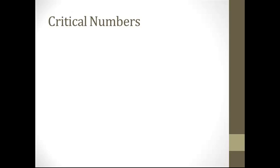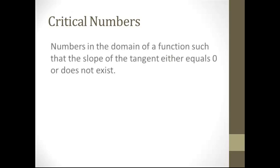So what is a critical number? A critical number is a number in the domain of a function such that the slope of the tangent equals zero or does not exist. This is basically what Fermat's theorem is telling us. We're looking for numbers x equals c where that slope is zero, because that's going to be at least a local maximum or minimum — it could be an absolute one too.